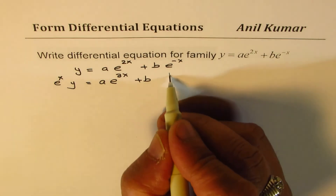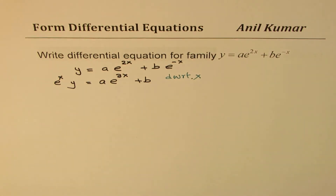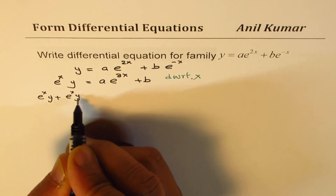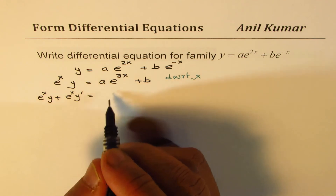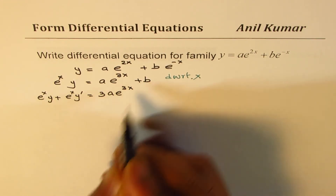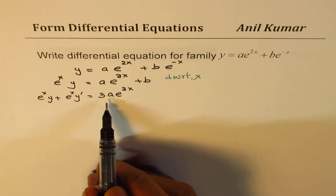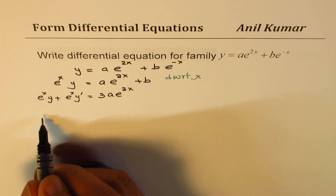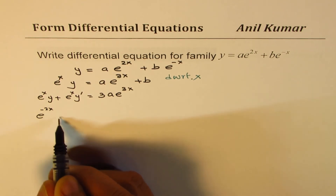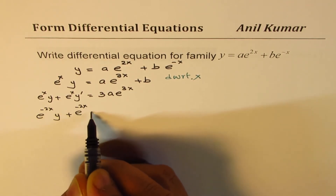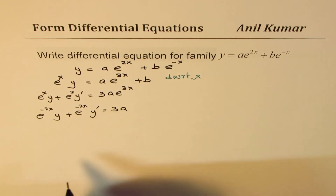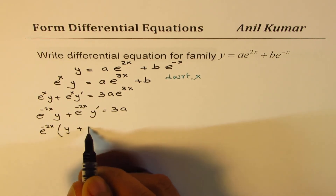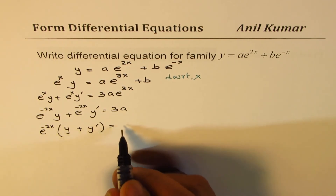Now differentiate with respect to x. Applying the product rule: e^x·y + e^x·y' = 3a·e^(3x), and the b term gives 0. To eliminate a, multiply by e^(-3x): e^(-2x)(y + y') = 3a.